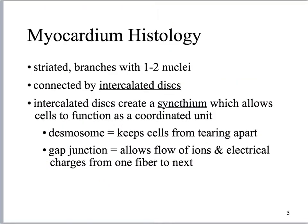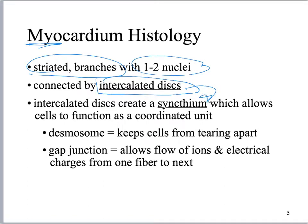We're going to start looking at some pictures of the histology of the myocardium, so the cardiac muscle. This is reviewed from A&P 1, so you need to remember the striated branches, 1–2 nuclei, the intercalated discs, which create the functional syncytium. The intercalated discs have two structures: desmosomes and gap junctions. Gap junctions are what allow the syncytium to share charged ions between the cells.